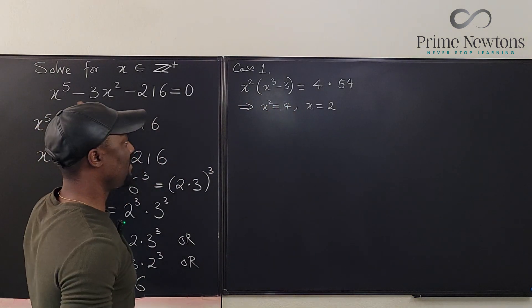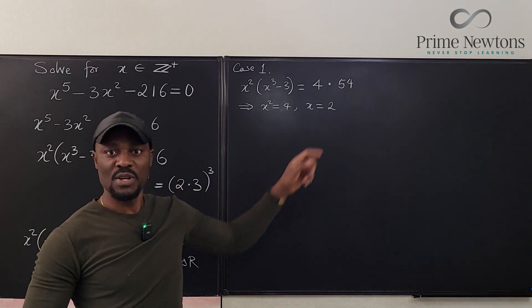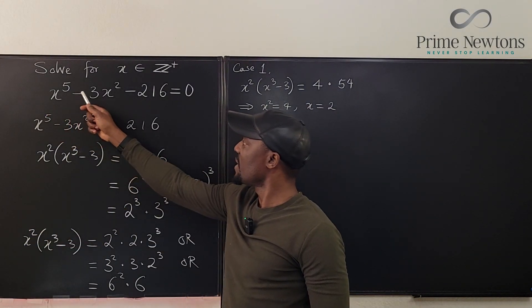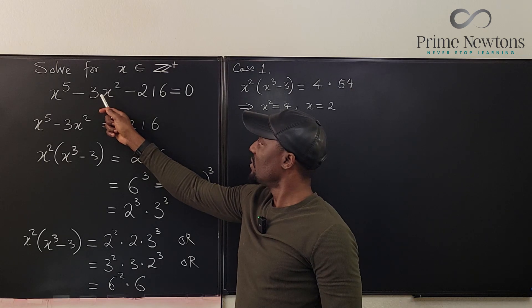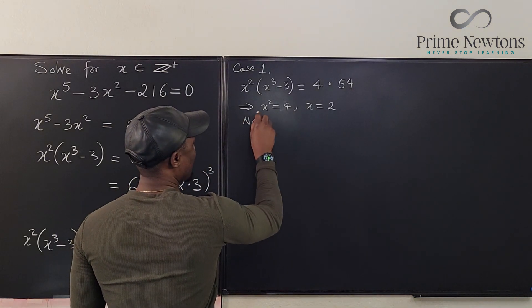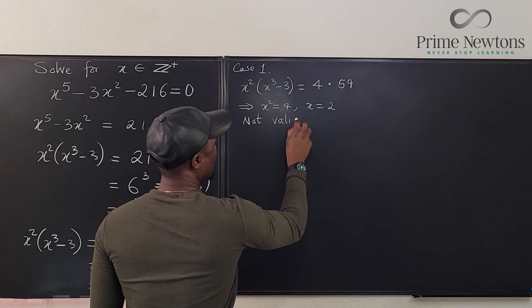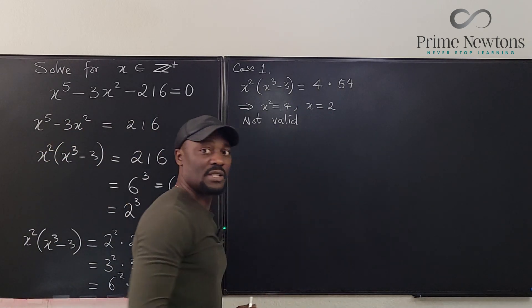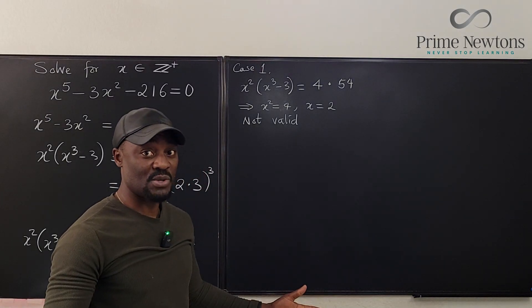It will not satisfy this. x equals 2 will not satisfy this equation. It's not valid because if you're plugging x equals 2 here, this equation will not give you zero. It's a negative number you're going to get.